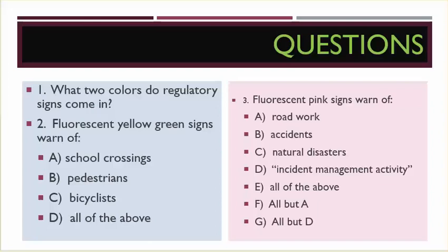Number three, fluorescent pink signs warn of A: road work, B: accidents, C: natural disasters, D: incident management activity, E: all of the above, F: all but A, G: all but D.